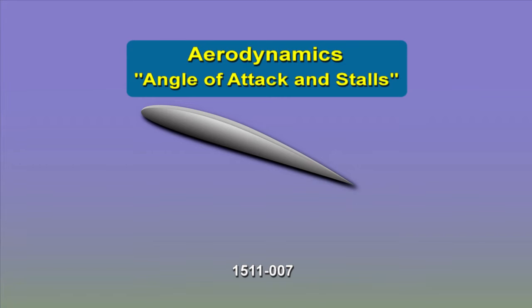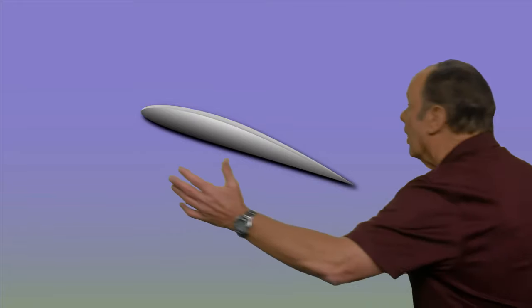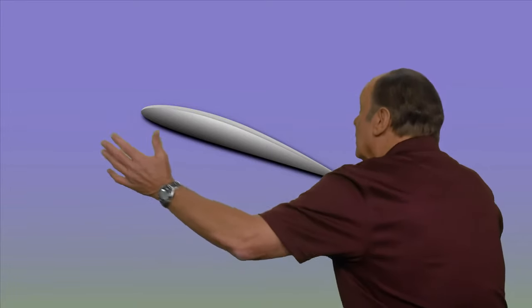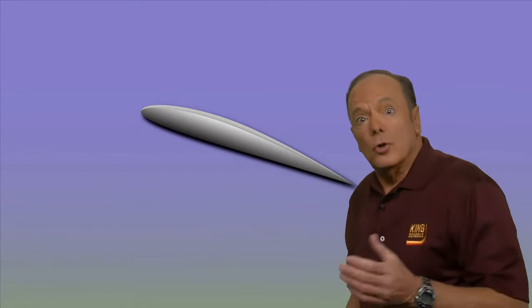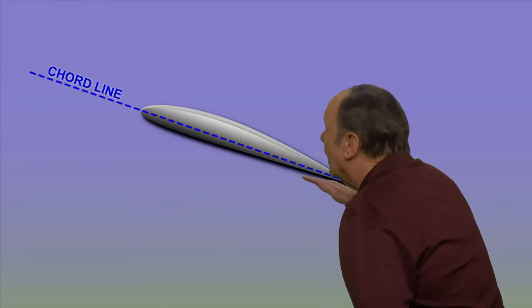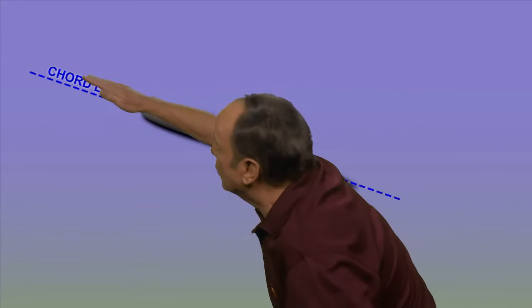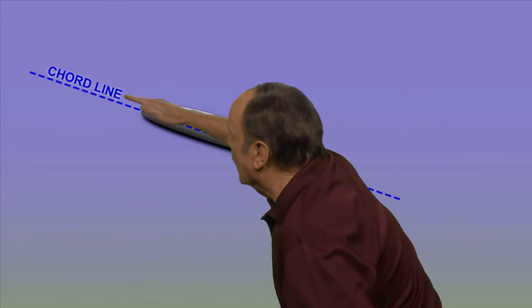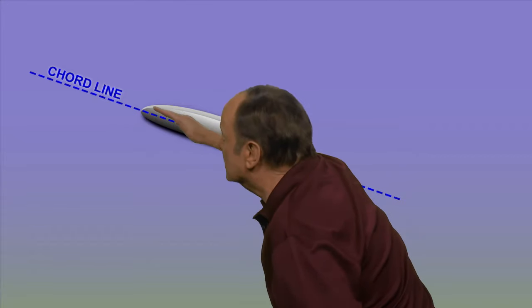Let's take a look at a couple of terms the FAA wants you to know about. First of all, let's take a look at an aircraft wing. If you draw a line here from the trailing edge of the wing up to the leading edge, that line is called the chord line and it points the direction the wing is pointed.